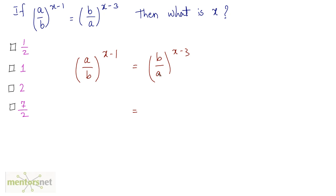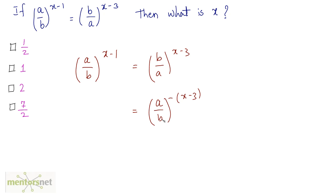If I write the right hand side's number as (a/b), then I'll have to change the power — I'll have to add a negative sign to the power, so minus of x minus 3. Both of these values mean the same thing; I've just inverted or swapped the numerator and denominator, hence I'll have to change the power sign to negative.